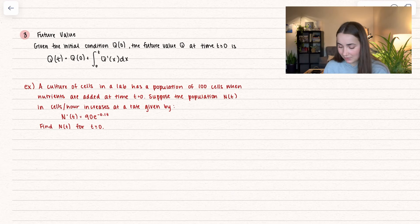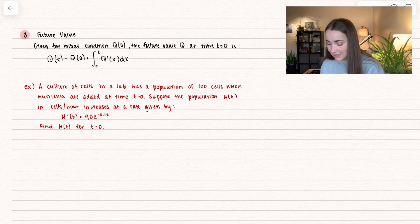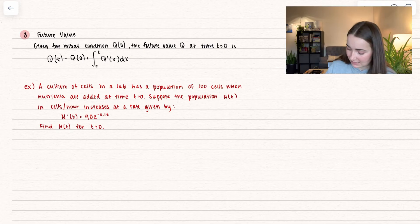In application, we have an example: A culture of cells in the lab has a population of 100 cells when nutrients are added at the first hour. Suppose the population N(t) in cells per hour increases at a rate given by the first derivative equal to 90e to the negative 0.1t. We want to find the actual function N(t) for time t greater than or equal to zero.